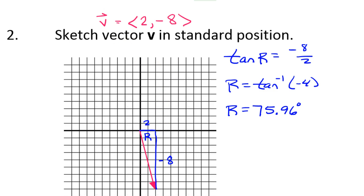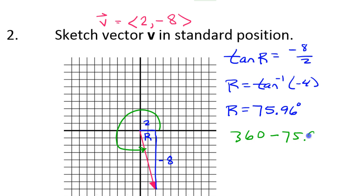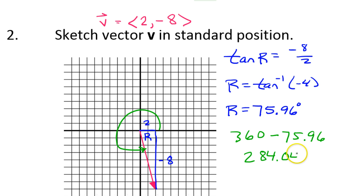If I want the actual angle measured counterclockwise from the positive x-axis all the way around to the actual position, the best thing to do is start with 360 degrees and subtract the reference angle. So 360 minus 75.96 equals 284.04 degrees. That is the direction of vector v.